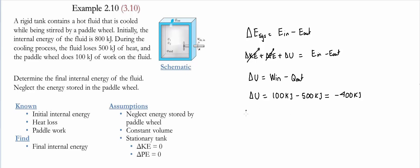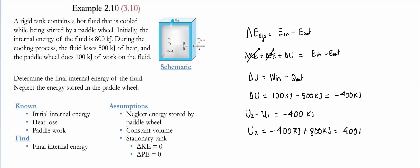The change in internal energy equals U2 minus U1, which equals minus 400 kilojoules. Therefore, U2 equals minus 400 kilojoules plus the initial internal energy of 800 kilojoules, giving us 400 kilojoules. So the final internal energy at the end of the process is 400 kilojoules. We had work going into the system and heat leaving the system, and that is how we arrived at this value.